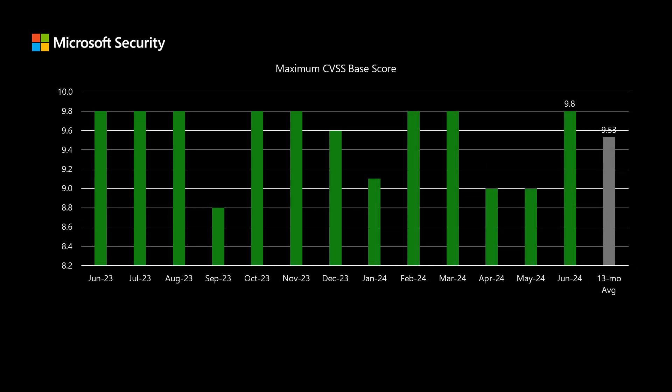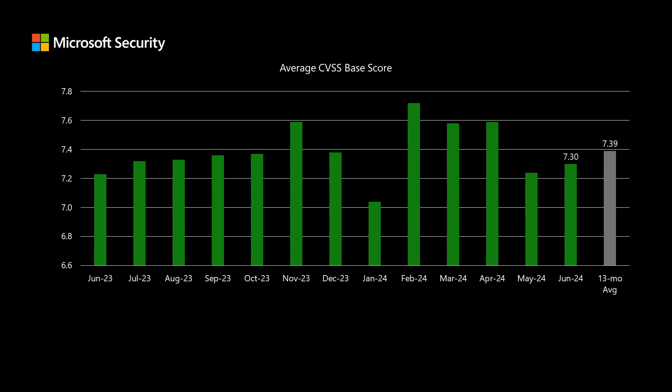Next, we'll talk about scoring, where Microsoft uses the Common Vulnerability Scoring System, or CVSS. This is an industry standard methodology to score different vulnerabilities across different software and hardware services and products. It allows us to compare different vulnerabilities on a nice even scale. This month, the highest scored vulnerability is 9.8 on that scale that goes up to 10, and we've been averaging just around 9.5 over the past 13 months. The average score across all 51 vulnerabilities in the release comes out to 7.3, which is just a little bit below our average of 7.39.